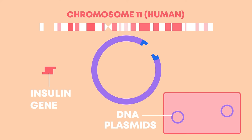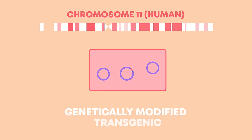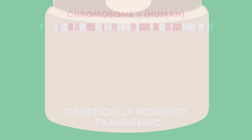Because the same restriction enzyme was used to cut both the human DNA and the bacterial plasmid, the sticky ends are complementary and will allow for joining using complementary base pairing. The insulin gene is joined to the plasmid by the sticky ends, and an enzyme called ligase is used to complete the joining of the two pieces of DNA. The modified plasmid is then reinserted into the bacterial cell. The modified bacterium is a genetically modified or transgenic organism because it contains some human DNA along with its own bacterial DNA. Its DNA is called recombinant DNA — bacterial DNA recombined with human DNA.